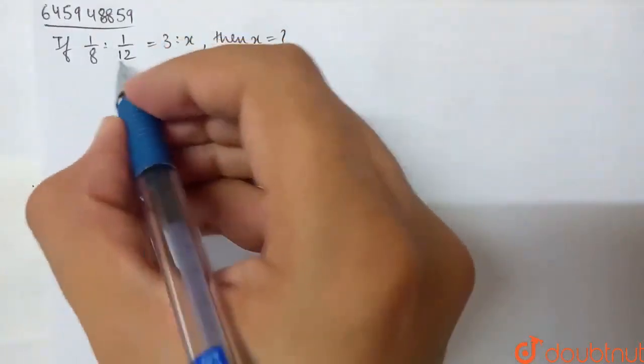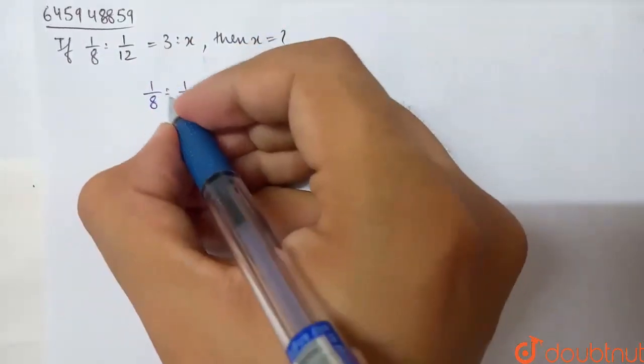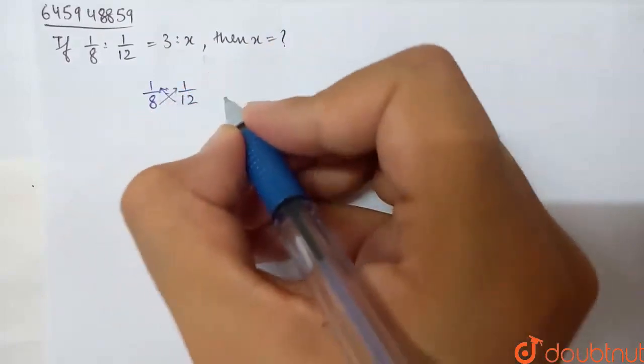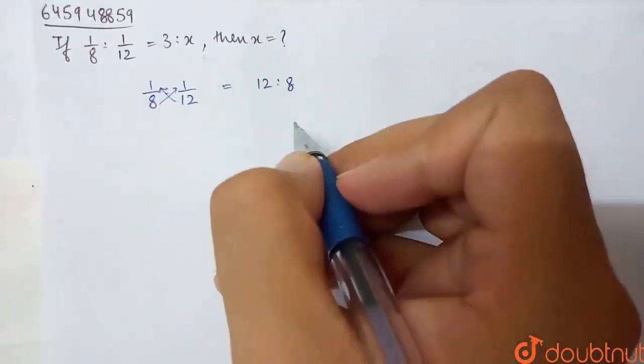So, 1/8 is to 1/12. Cross multiply 1/8 to 1/12. This can be cross multiplied by 12. What do I have? Basically 12 is to 8. Cross multiplication is in our ratios.